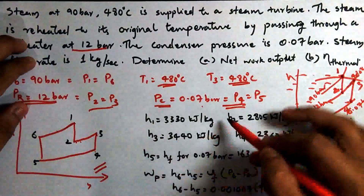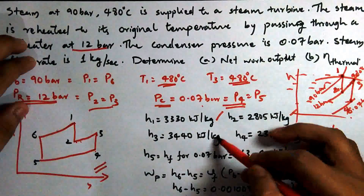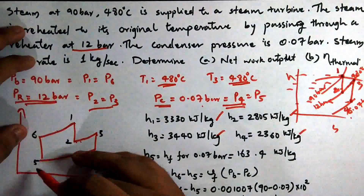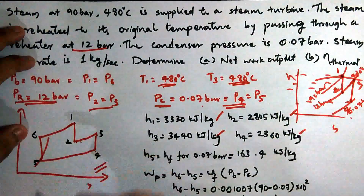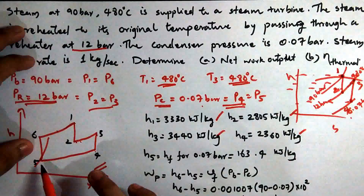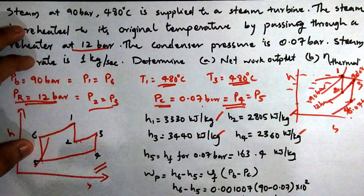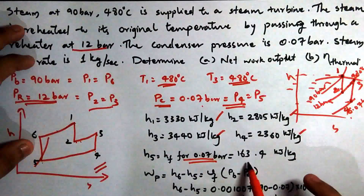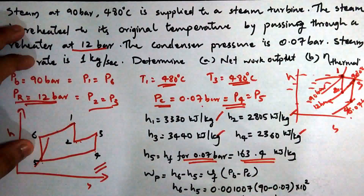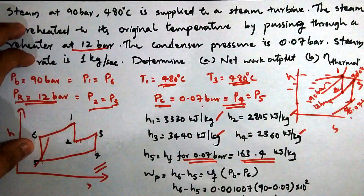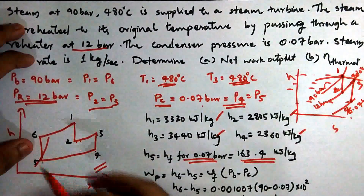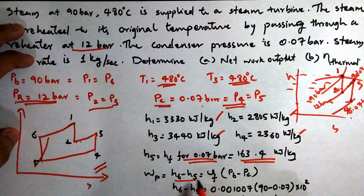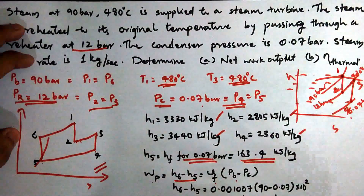From the H-S diagram we read off the values of H1, H2, H3, and H4. Point 5 is on the saturation line — it is completely liquid — so H5 equals HF at the condenser pressure of 0.07 bar. We look up the stream table at 0.07 bar to find the HF value, which gives H5.